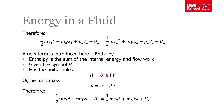So H equals U plus P·V. In thermodynamics we can also express things as specific quantities — dividing through by mass — using lowercase letters. So specific enthalpy h equals specific internal energy u plus pressure times specific volume v. Because H equals U plus P·V, we can substitute that into the energy equation to rewrite it in terms of enthalpy, giving us the final relationship.